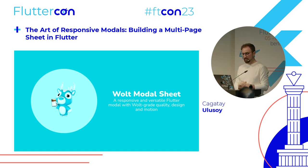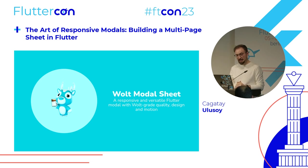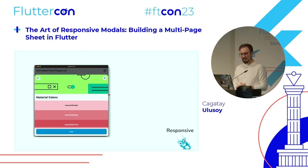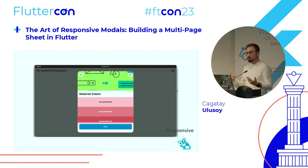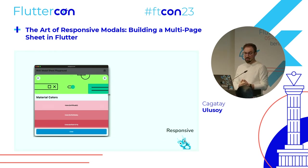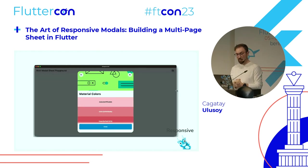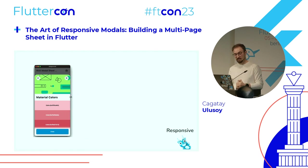After giving some background, we now talk about the Wolt Modal Sheet, which is an open source package available on pub.dev. It is designed to solve real problems — it's built with great design quality and is extensively used in different apps. One of the challenges of using bottom sheets in large screens is that as the screen width increases, we need to adapt. We can reduce the horizontal space, or use alternative layouts such as sidebars or dialogues. We chose to use dialogues in large screens and bottom sheets in small screens.